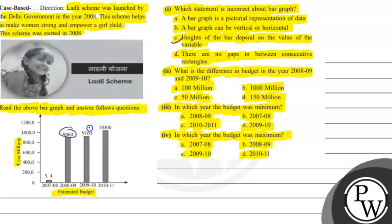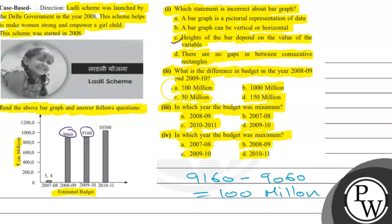Looking at the bar graph, the value is 9,160. The difference is 100 million. In which year is the budget minimum, and what is the minimum frequency? Then looking at the maximum frequency.